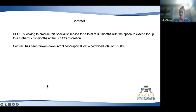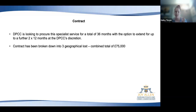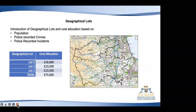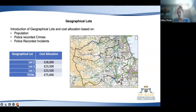We're looking to procure a service for a total of 36 months, with the opportunity to extend up to another 12 months twice. The combined total contract value is £75,000. What's different this time is we're breaking it down into three geographical lots, and that's my main focus for this presentation because it's different to how we've done it previously.